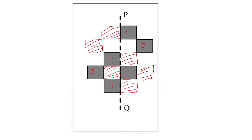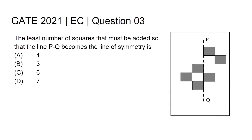So a total of six blocks must be added in order to make this pattern symmetric with respect to line PQ. Therefore, the answer to this question is option C: 6.